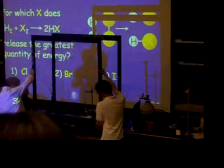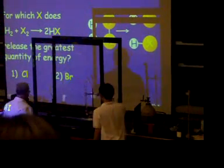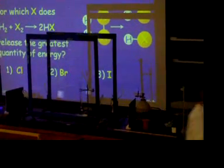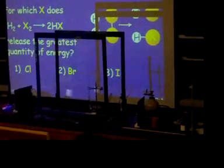The halogen molecule breaks it, forms HX, which is either HCl or HBr or HI, and you get a chain reaction.